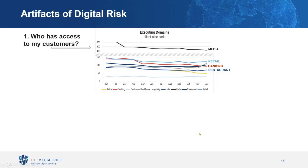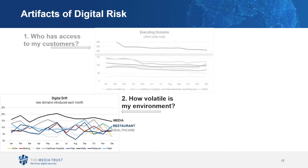The second artifact is understanding how volatile your environment is. Digital is dynamic and constantly changing to deliver and optimize user experience. You measure this by measuring digital drift — assessing new domains, usually on a monthly basis. From the 2020 data, media was high, averaging about 17%, but that's an ad-supported industry. Restaurants are pretty much at the middle or bottom of the pack, but they appear to be fluctuating wildly, averaging about 7%, likely driven by efforts to support online orders.